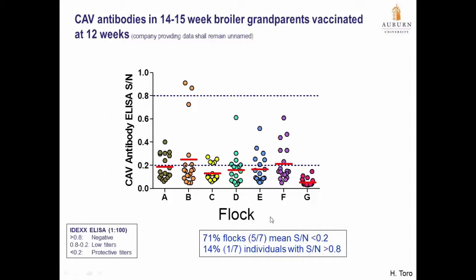In comparison, these are broiler grandparent flocks which were vaccinated at 12 weeks of age. Most of the values are within the positive range, with just one flock showing a couple of birds that were negative. In this case, 71 percent of flocks — 5 out of 7 — show mean SN ratios less than 0.2, which are nicely positive. Only 14 percent, 1 out of 7, showed individuals with SN ratios higher than 0.8.